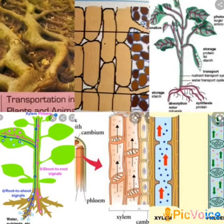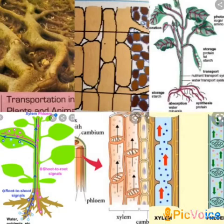In unicellular organisms, transportation takes place with the help of two processes known as diffusion and osmosis. Diffusion is the process of mixing of two particles of different substances on their own, and osmosis is the process of transfer of substances through a semi-permeable membrane. These two processes help substances to get transported in a unicellular organism.